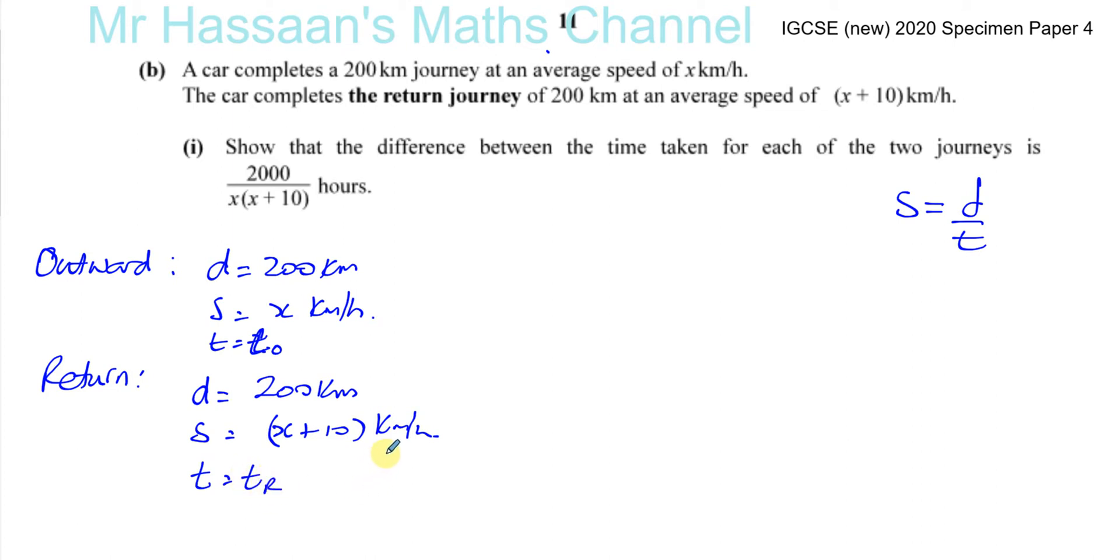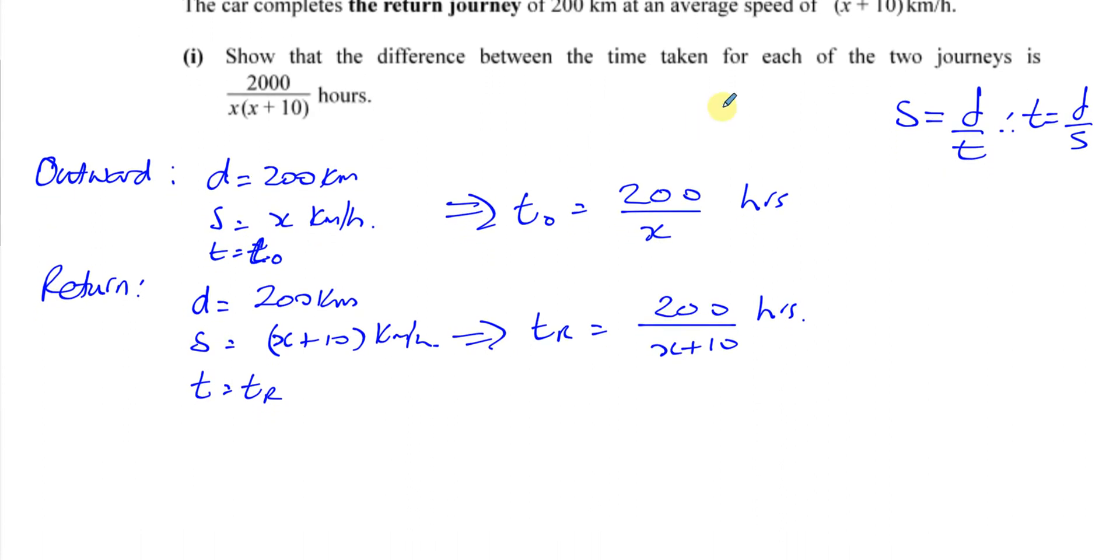Okay, so let's deal with this. We know that speed equals distance over time. Therefore, time is equal to distance over speed. So we're going to have the time outward is going to be the distance covered, which is 200, over the speed. This is going to be now in hours. So we have to show that the difference between the two times, the time taken for each of the two journeys, is 2000 over x times x plus 10.